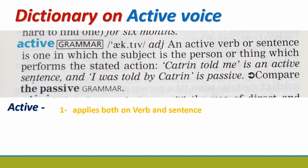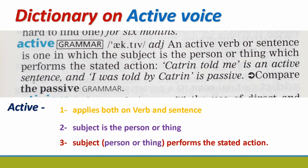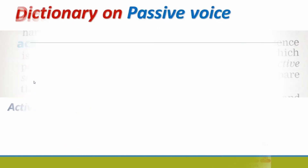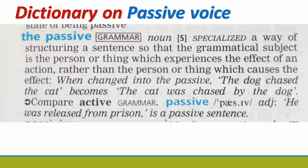If for a sentence we say that it is in active voice, the second point is that the subject is the person or thing — the subject is the doer, and can be a person or any object. The subject performs the stated action. Similarly, let's now look at the passive voice definition from the dictionary.